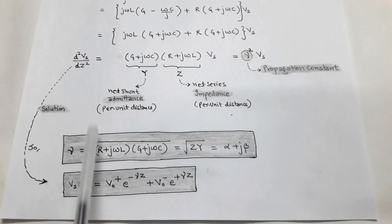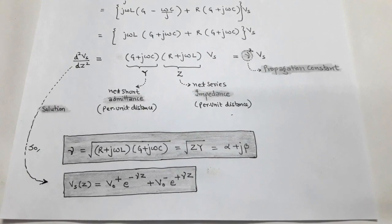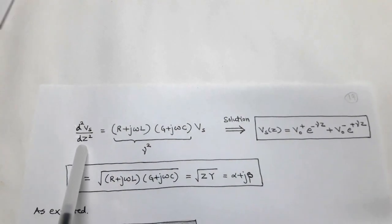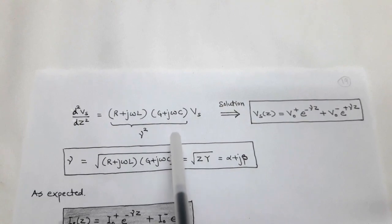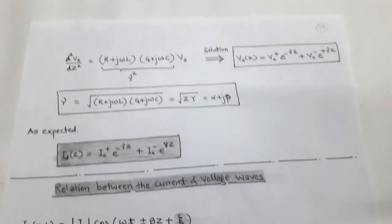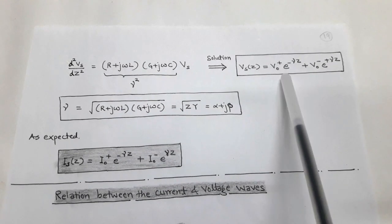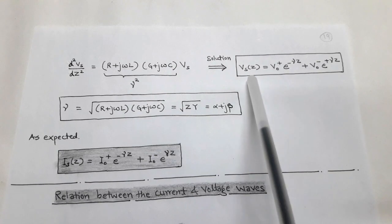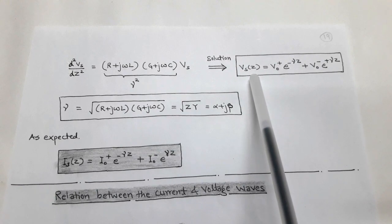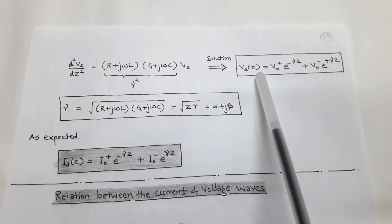This is the solution of the second order voltage equation. The second order equation is d²V_s/dz² = (R + jωL)(G + jωC)·V_s, where (R + jωL)(G + jωC) is the propagation constant γ². Its solution is the voltage function V_s(z) = V₀⁺·e^(−γz) + V₀⁻·e^(+γz). Here V_s(z) is called the phasor voltage, obtained by setting t = 0 and dropping the time factor.